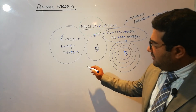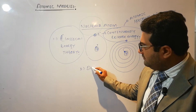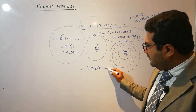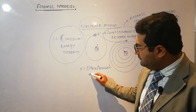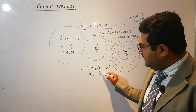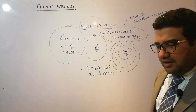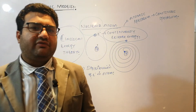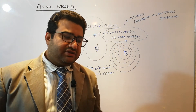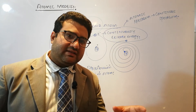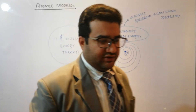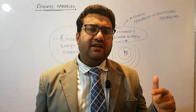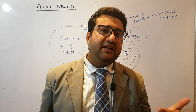Now the third drawback: Rutherford's model provided no idea about the distribution of electrons in the atom — how the electrons are distributed was not explained. So these three points were the drawbacks of the Rutherford model. In order to cover these drawbacks, a new model was presented by Niels Bohr.